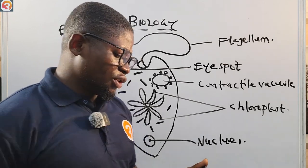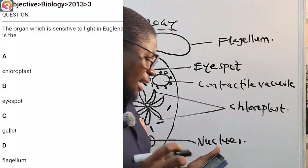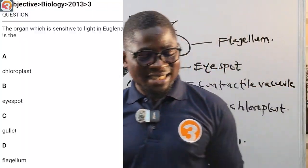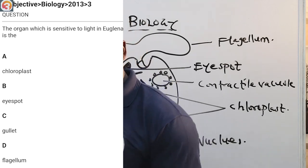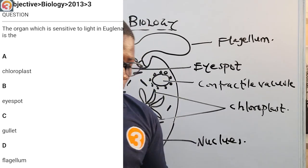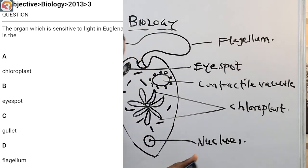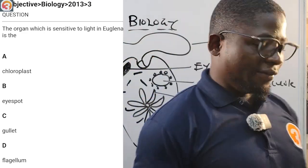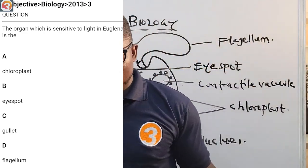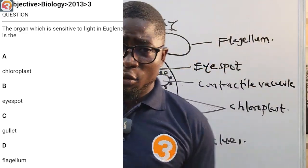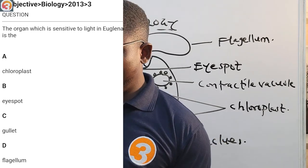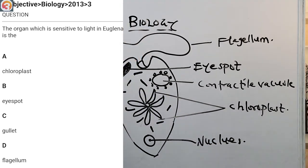Let's look at a question — this is a 2013 question number three. It asks: the organ which is sensitive to light in Euglena is the: A) chloroplast, B) eye spot, C) gullet, D) flagellum. There are many more questions about Euglena on the O3 Schools Jump app. We'll come back to answering questions at the end of this class.